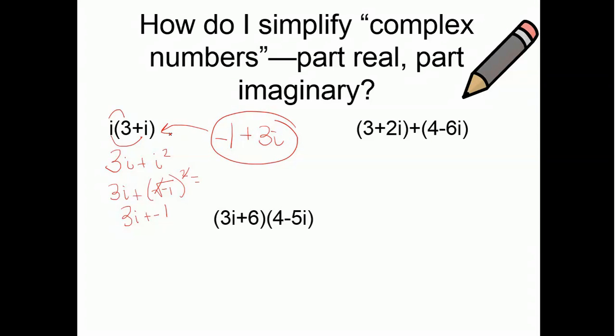Whenever you see an i squared, you're always going to want to rewrite that. Now, this one, I have 3 plus 2i plus 4 minus 6i. So, basically, we're going to combine like terms.